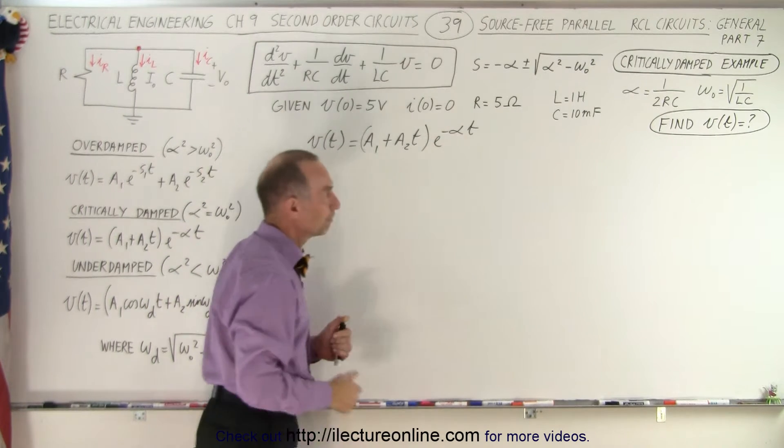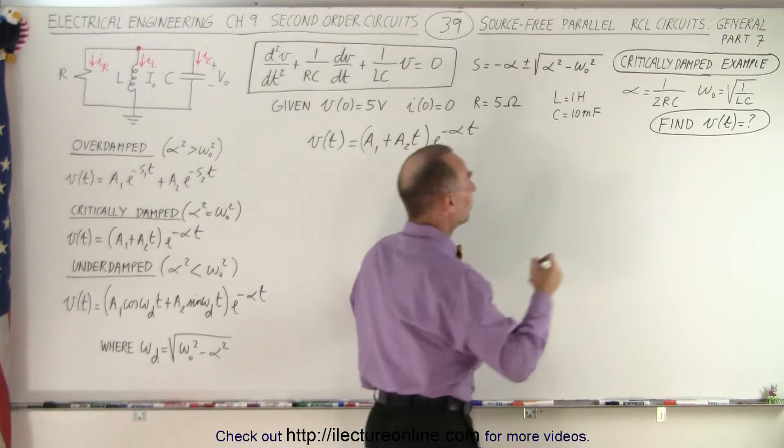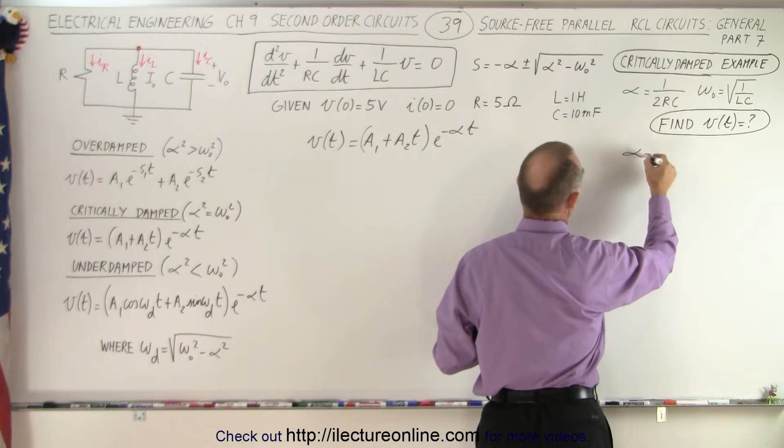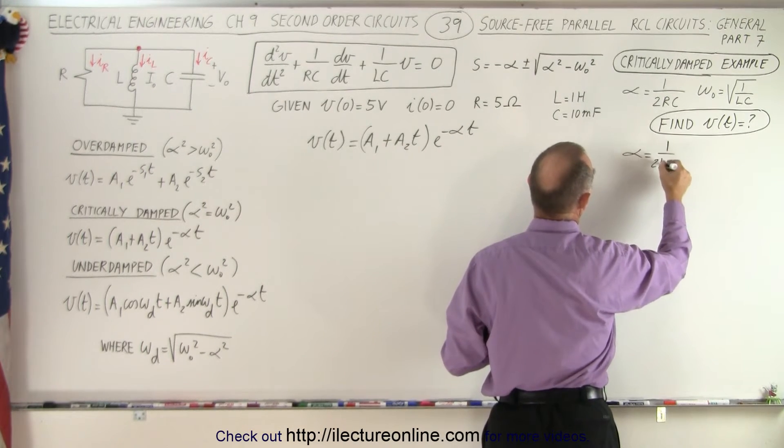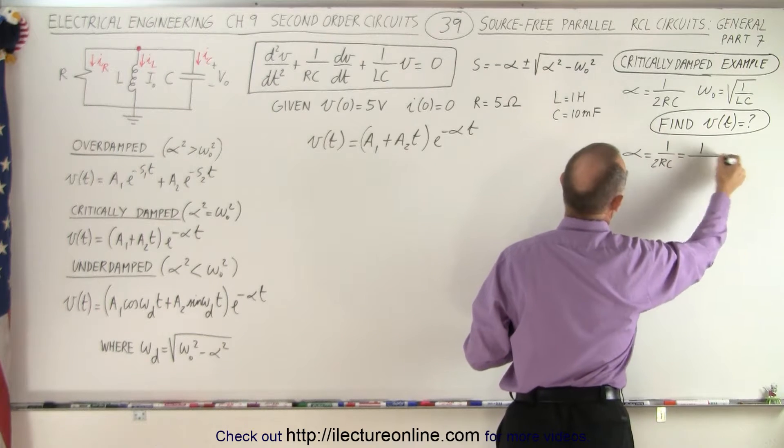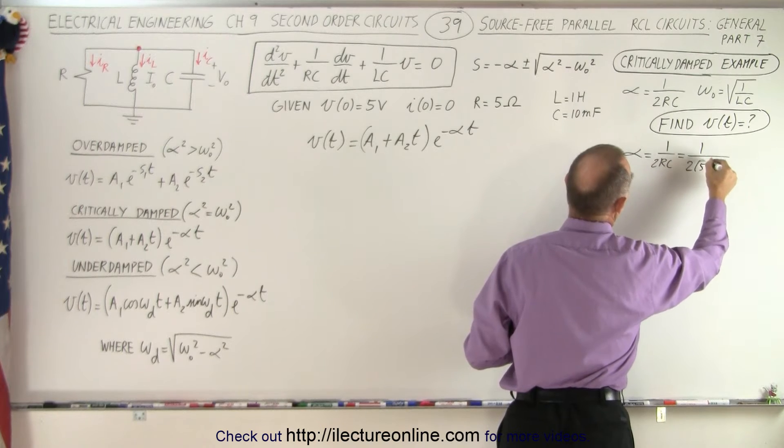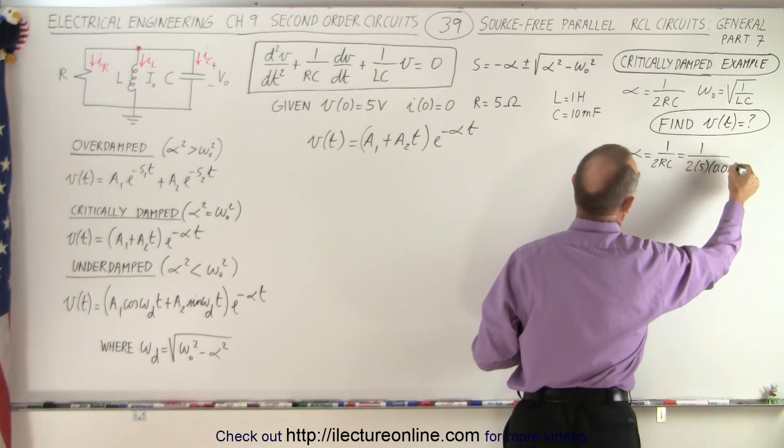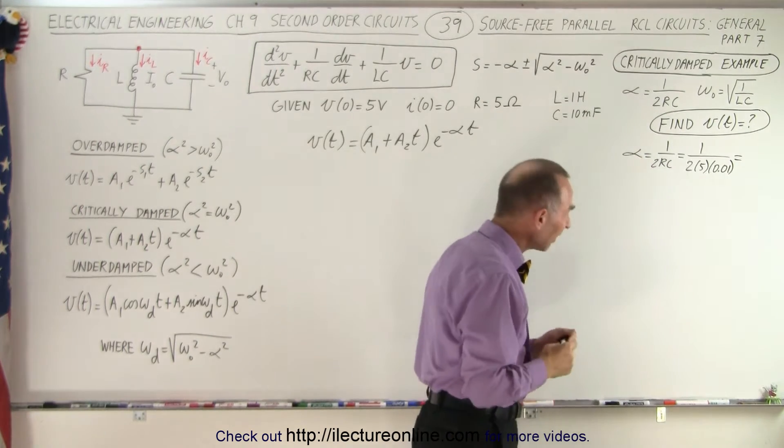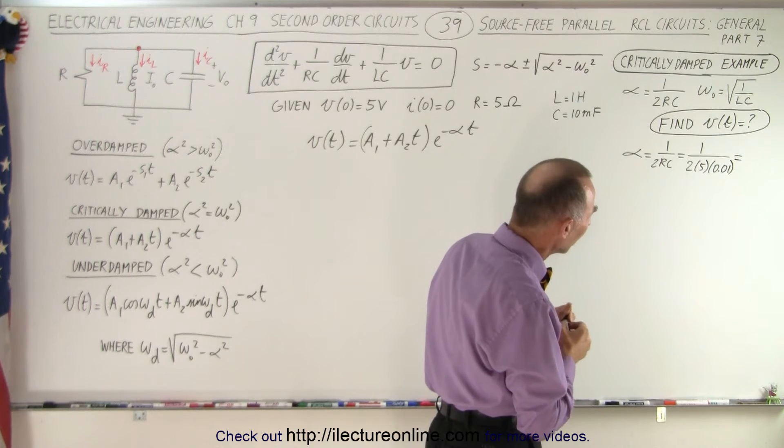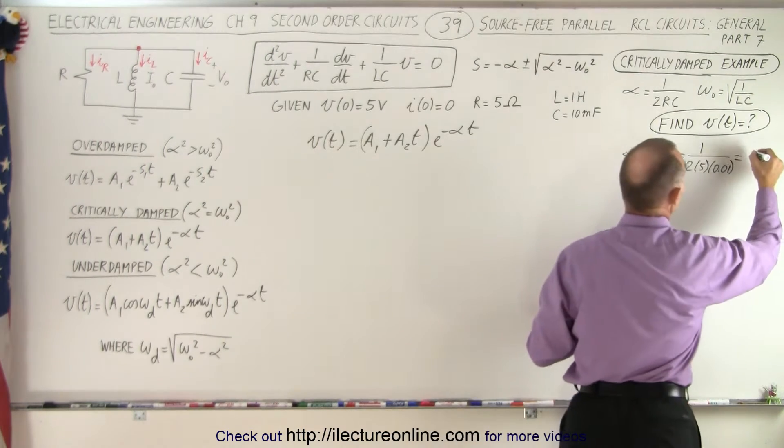Of course, you also need to find the alpha. So alpha is equal to, by definition, it's 1 over 2RC, which in this case is 1 over 2 times 5 times 0.01. And let's see, that's equal to, that would be 10, that's 1 over 0.1, that's equal to 10.